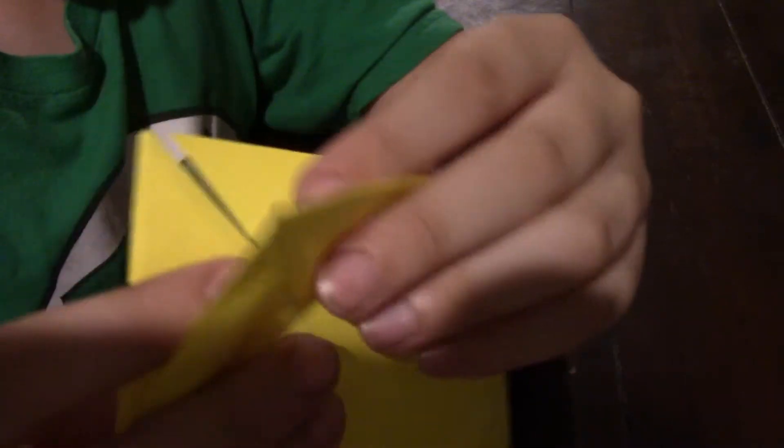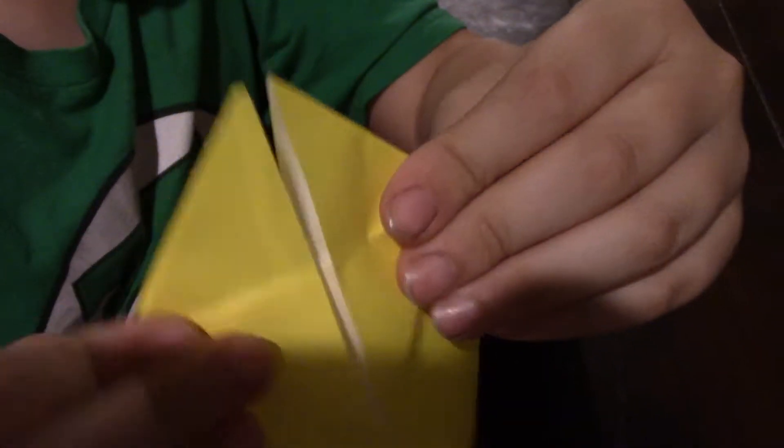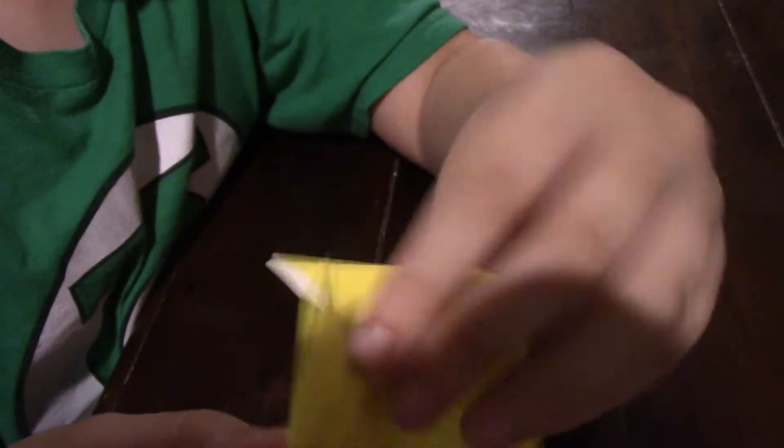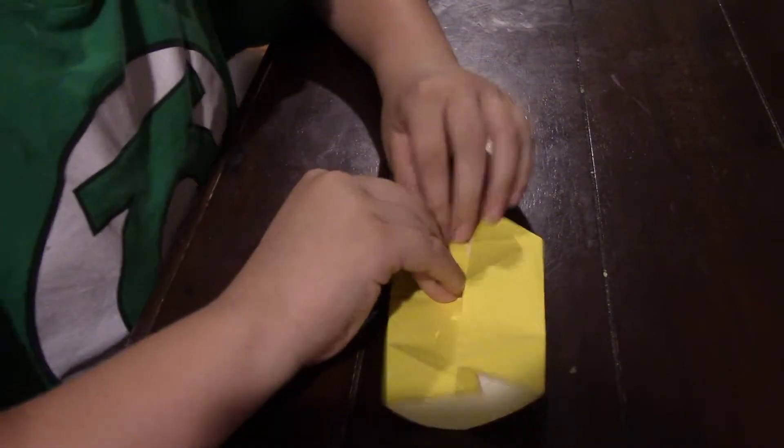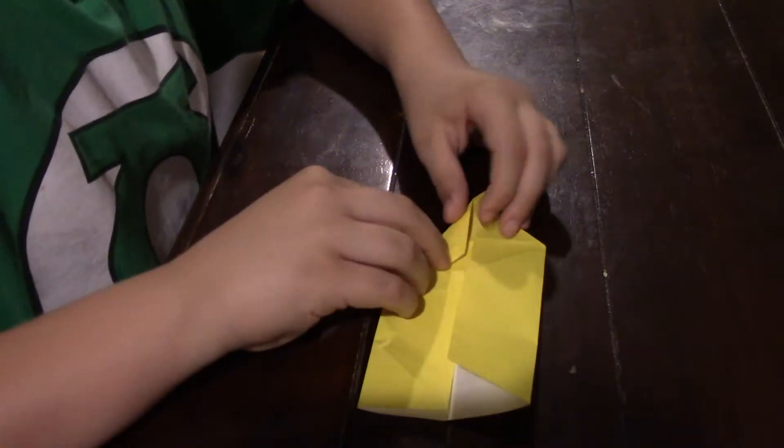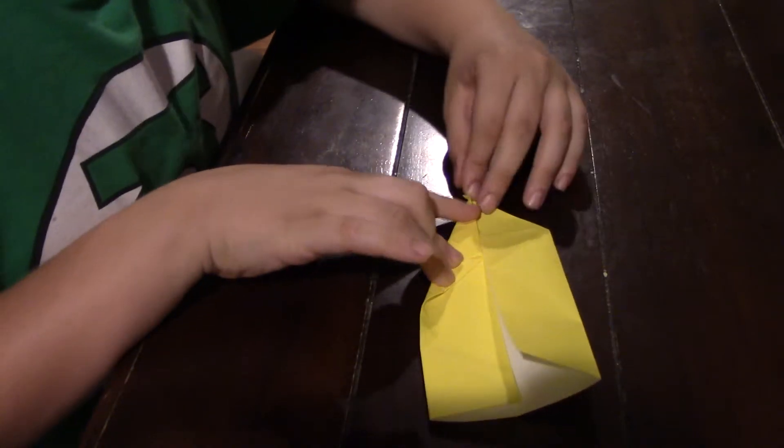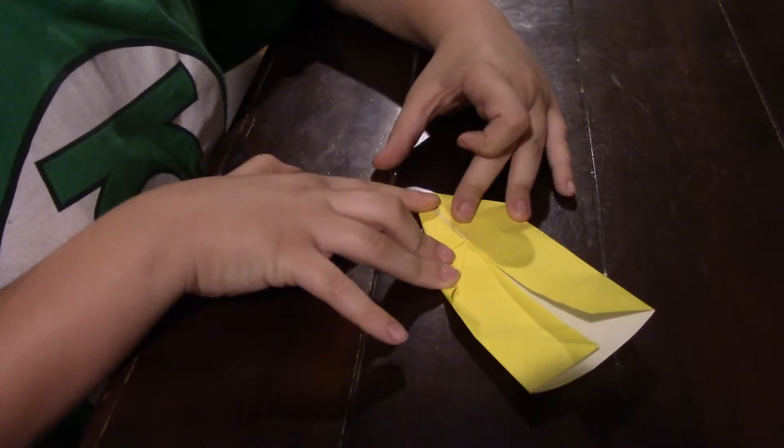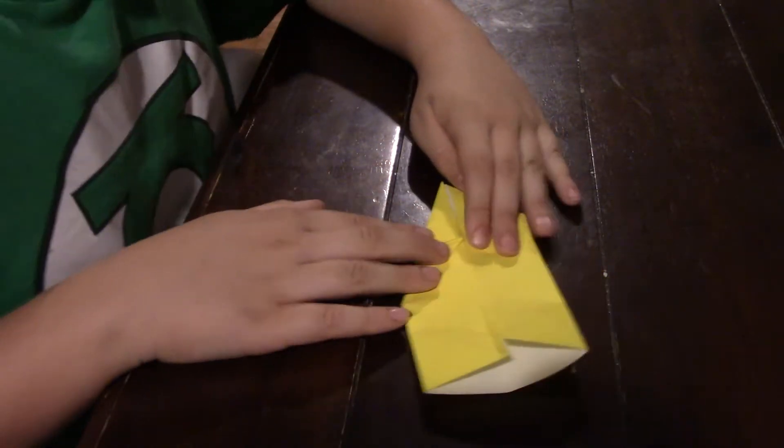Now you're going to take this and fold this back behind so you have the two flappy pieces up here at the top. Now take it and fold it into the center, like that.